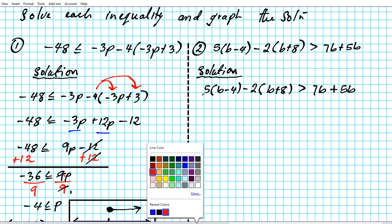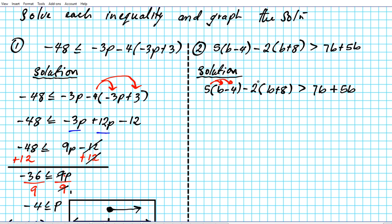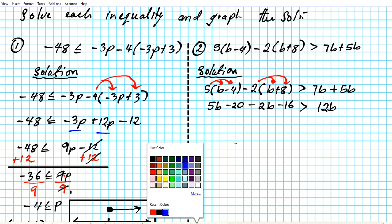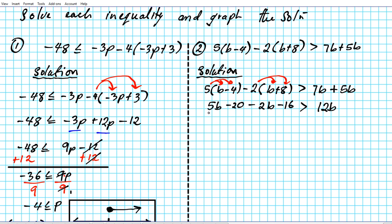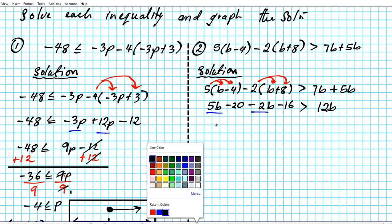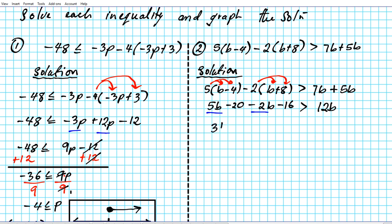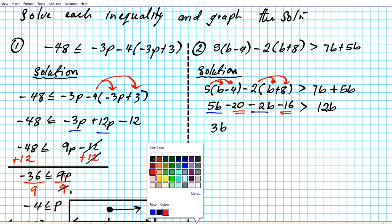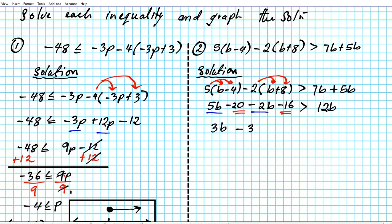We distribute 5 to the terms in the first parenthesis and negative 2 to the terms in the second. 5 times b is 5b, 5 times 4 is negative 20, negative 2 times b is negative 2b, negative 2 times 8 is negative 16. On the right side, 7b and 5b are like terms — combining gives 12b. On the left side, combining 5b and negative 2b gives 3b, and negative 20 minus 16 gives negative 36. So we have: 3b − 36 > 12b.